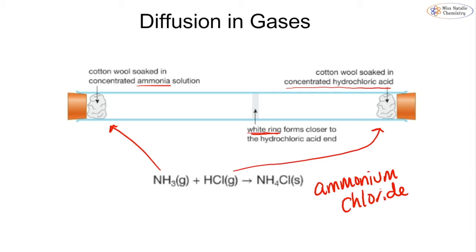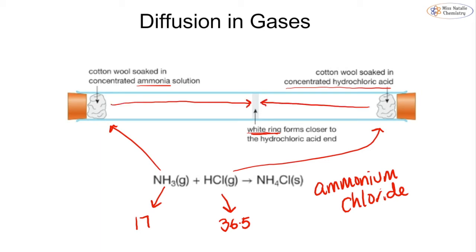The white ring forms closer to the hydrochloric acid end because of the difference in mass. Ammonia has a relative formula mass of 17, while hydrogen chloride has a relative formula mass of 36.5. The lighter ammonia particles move further along the tube than the heavier hydrochloric acid particles. This proves that diffusion occurs, because the two substances started at completely opposite ends of the tube yet met in the middle to form ammonium chloride.